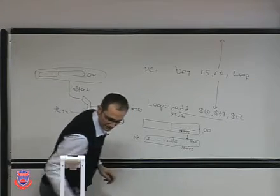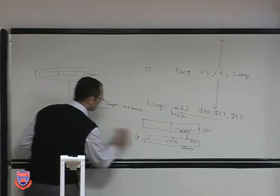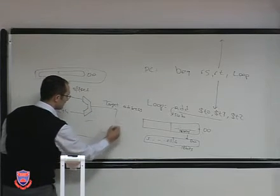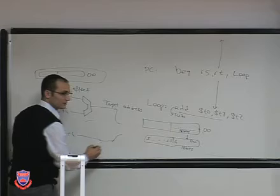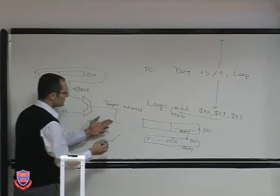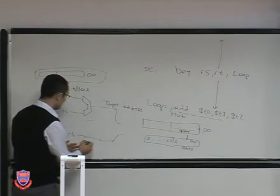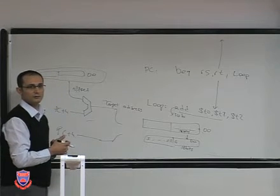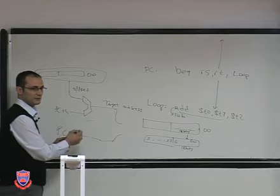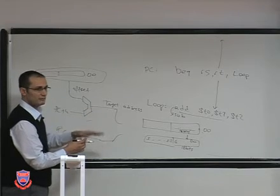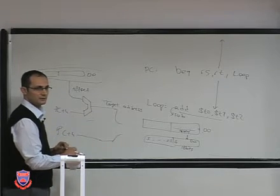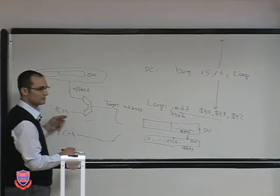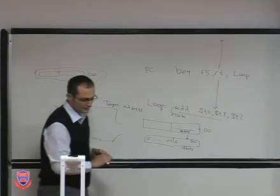The multiplexer selects either PC plus 4 or the target address depending on the instruction type. If this is a branch instruction, it selects the target address. If it is a regular add, subtract, multiply, any R-type or load instruction, it will continue with PC plus 4, because each instruction is followed by the next one in sequence. That's why we compute PC plus 4, and everything is based on PC plus 4 in branch target address calculation.